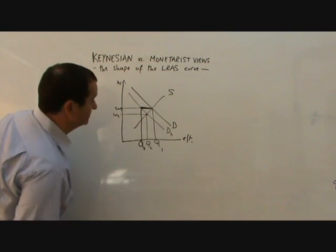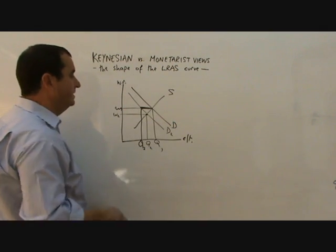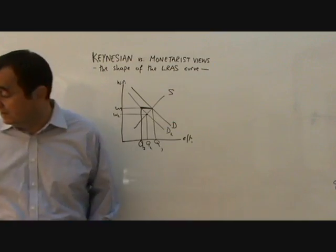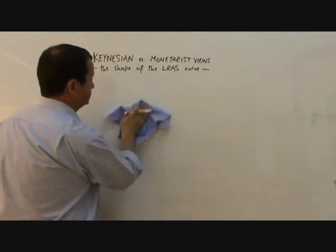So from a Keynesian point of view, the wages do not fall easily and this excess supply is created, whereas the monetarists believe that, it may take some time, but at least eventually the market will clear. Now remember that disagreement, because now I can show you how that relates into ADAS diagrams.